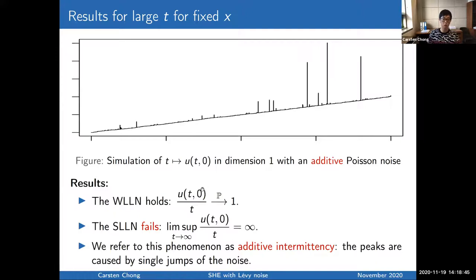What you can actually show is that the solution satisfies a weak law of large numbers. So if you normalize solution by time, this will converge in probability to its mean which is given by one. On the other hand, the strong law of large number fails. If you look at this quotient and take the almost sure lim sup, this would be plus infinity. In other words, the peaks that you see here prevent the solution from converging to the mean one here. And we refer to this phenomenon as additive intermittency. So additive, because the peaks that you see in this solution are caused by single jumps of the noise, and they already appear in the case when you have additive noise. So this is in sharp contrast to the Gaussian case where you do not have such high peaks in the additive case.